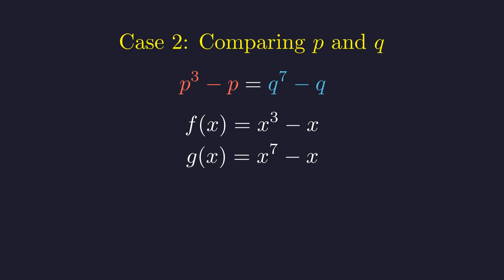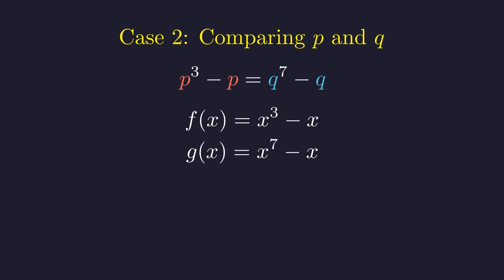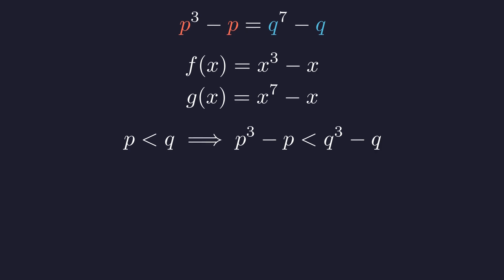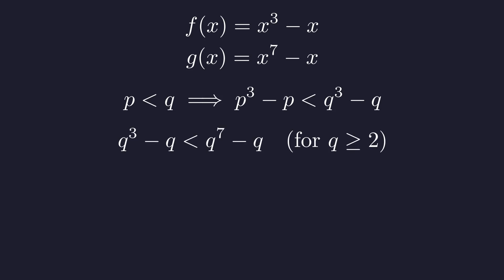Let us first assume that p is less than q and examine the consequences. Since the function f of x is increasing, the condition p is less than q implies that p cubed minus p is strictly less than q cubed minus q. Additionally, for any prime q greater than or equal to 2, q to the 7th is greater than q cubed. This means q cubed minus q is strictly less than q to the 7th minus q.